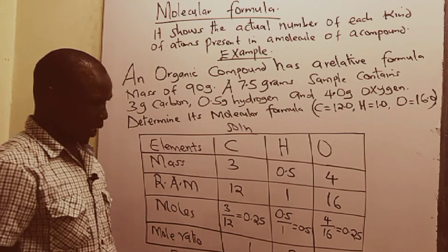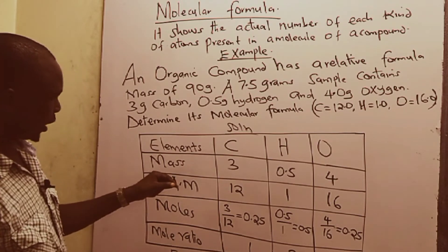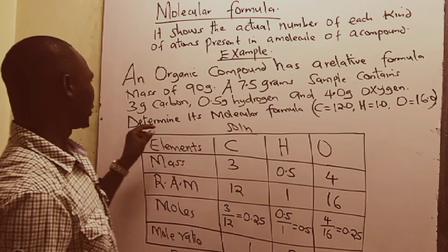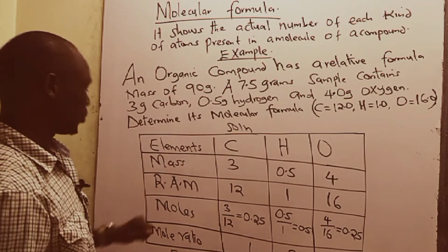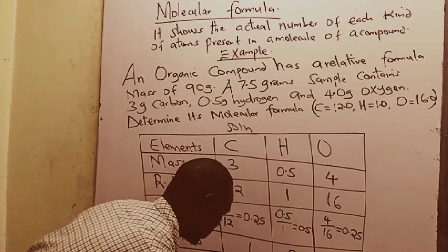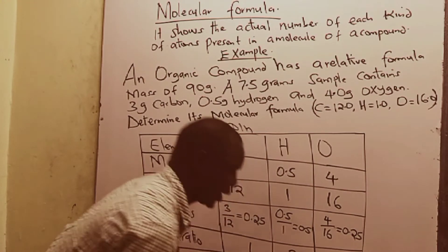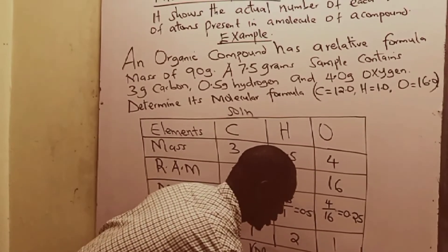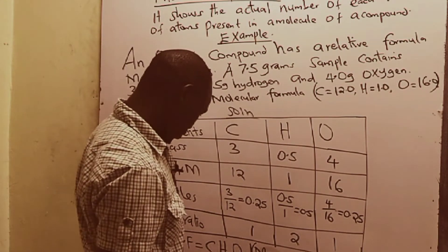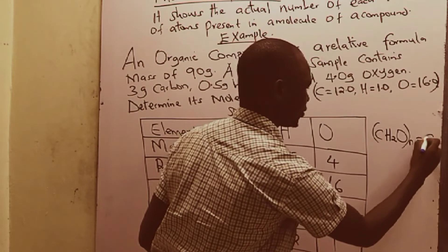From the empirical formula, we are able to get the molecular formula. If you take the molecular mass of the empirical formula and multiply by N, it will give you the relative formula mass. That is, the empirical formula mass multiplied by N, where N is a whole number, must give us the relative molecular formula mass. We have CH₂O multiplied by N, and this must equal 90.